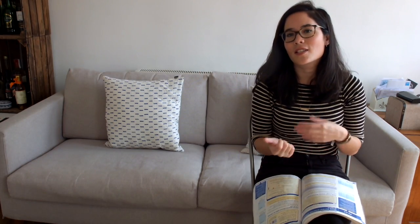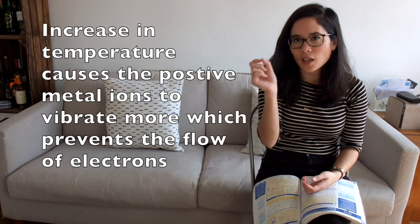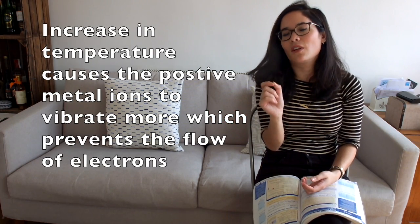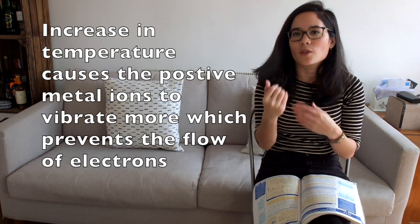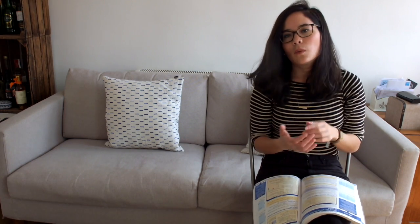Why does the resistance in a metal filament increase when the temperature increases? That's because this increase in temperature causes the metal ions—the positive ions inside that metal filament—to vibrate more, and what they do is they slow the flow of the electrons. They stop them flowing through as easily, hence you see the resistance increases.